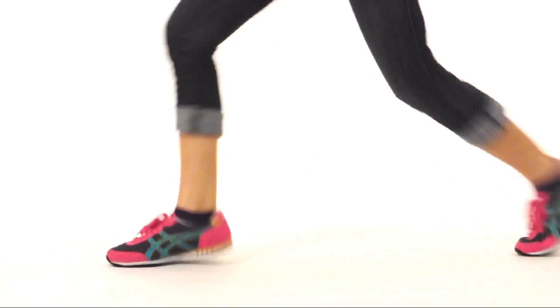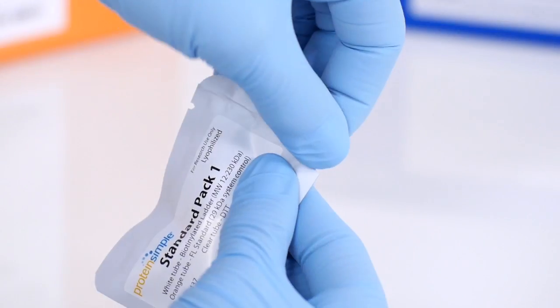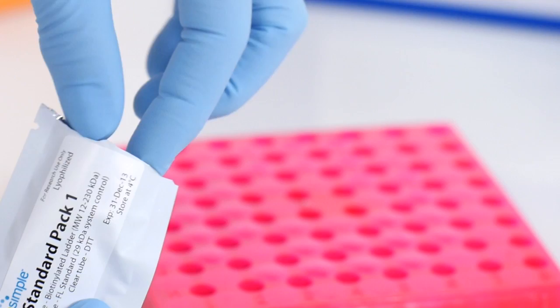Grab your blue reagent box out of the fridge and let's start pipetting your plate. Grab a standard pack from your blue box and remove the four tubes inside.